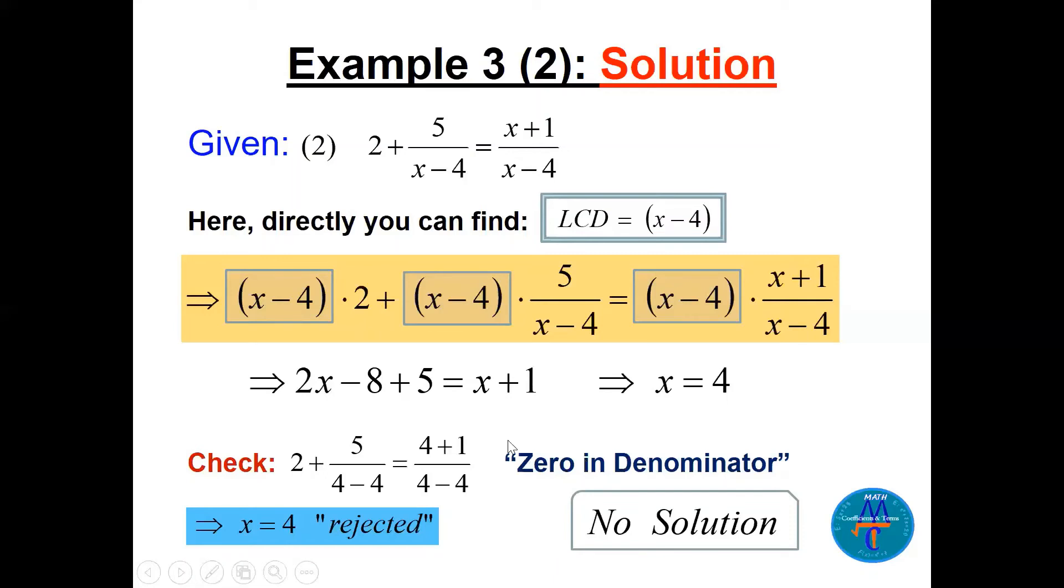So bring x here, x will be 4. So I have to check. Put in the original equation. See the original equation here? 5 over 4 minus 4, 4 minus 4. I have zero in the denominator. Rejected.